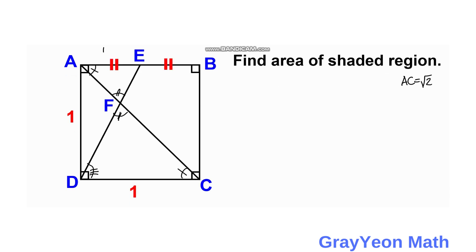We represent segment AF as X. Since AF is X, then segment FC is equal to √2 minus X. Since triangles AEF and FCD are similar, we can say that X over (√2 minus X) is equal to 1/2 over 1.